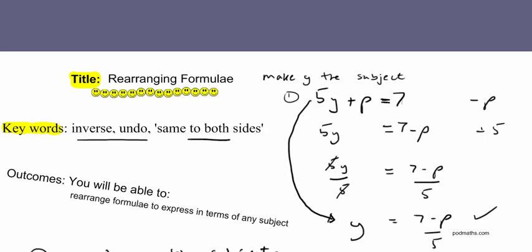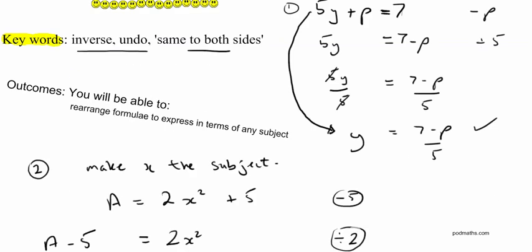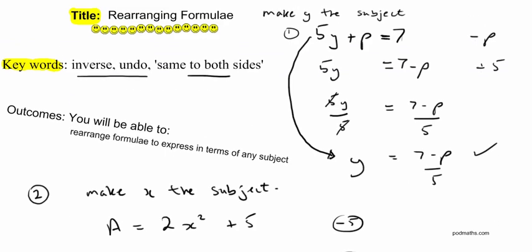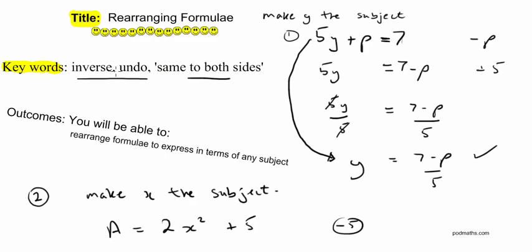A quick recap: we looked at rearranging formulae. Keywords were inverse and undo, same to both sides. The outcome was that you would be able to rearrange formulae to express in terms of any given subject. And that's the end of the lesson.